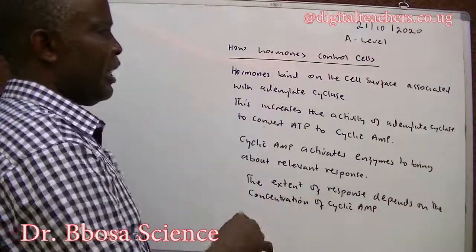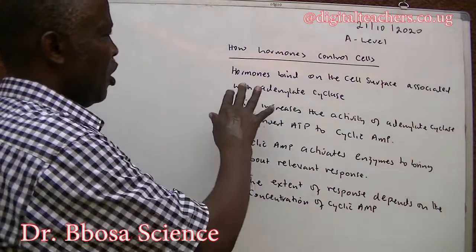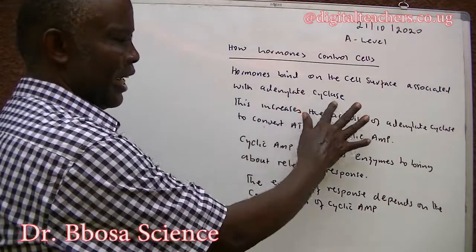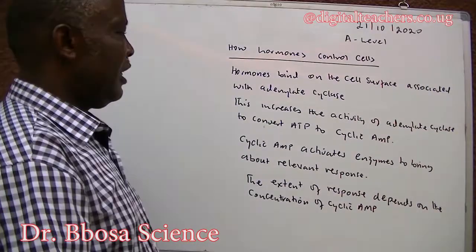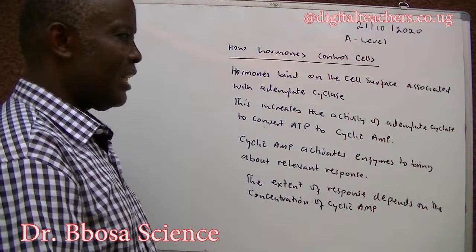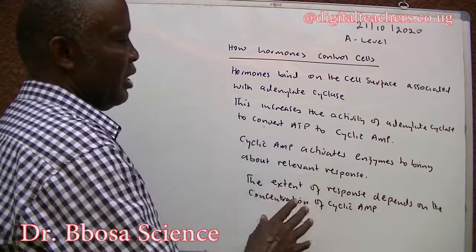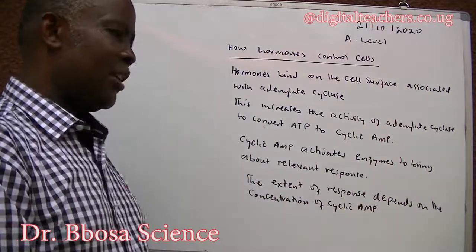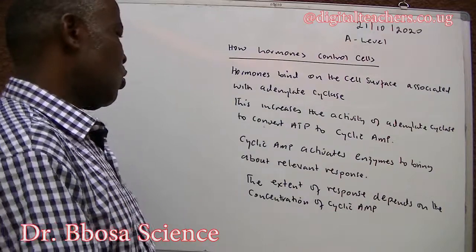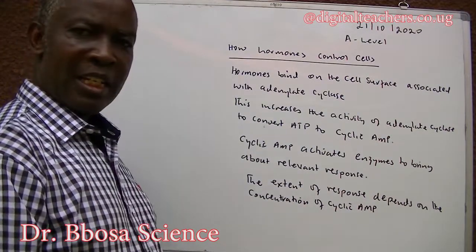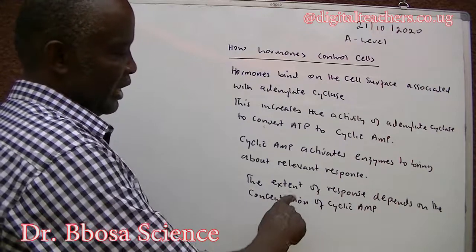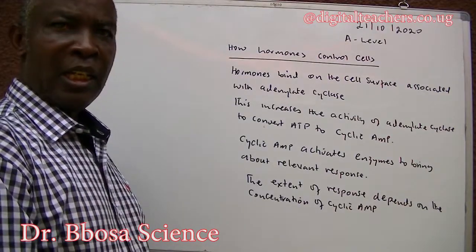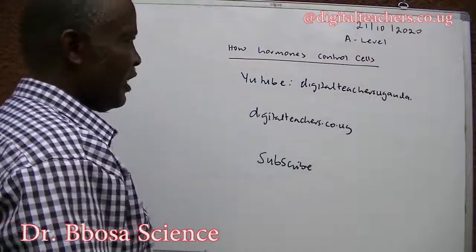Hormones bind on the cell surface associated with adenylate cyclase enzyme. This increases the activity of adenylate cyclase to convert ATP to cyclic AMP. Cyclic AMP activates enzymes to bring about the relevant response. The extent of the response depends on the concentration of cyclic AMP. Thank you very much for listening to this video.